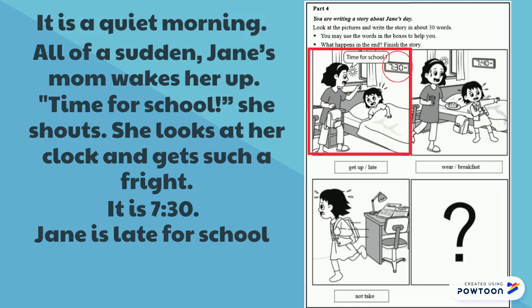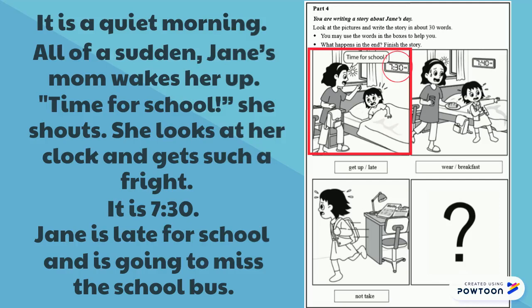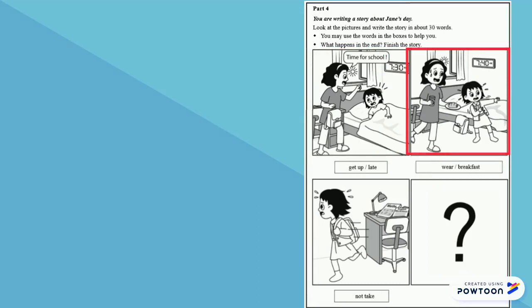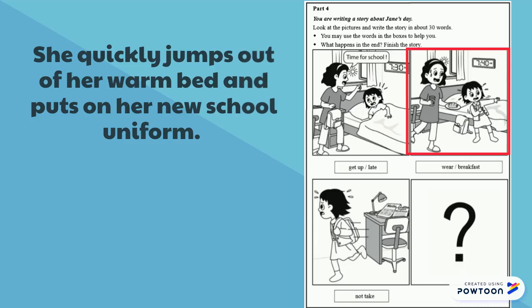How can I add to this sentence? I can say, Jane is late for school and is going to miss the school bus. In Picture 2, what does she do? She quickly jumps out of her warm bed and puts on her new school uniform. Do you see how I have used warm bed and new school uniform? I've even used quickly jumps out. I use these just to add more description.